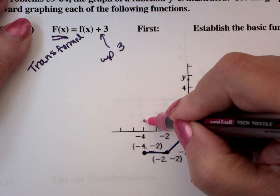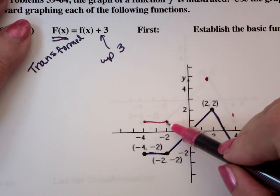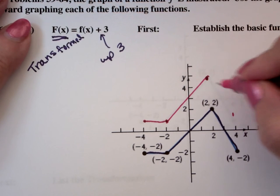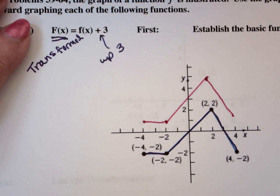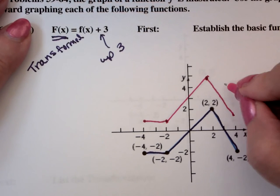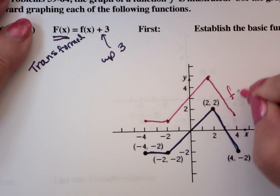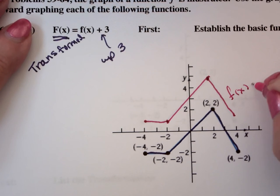And now you're going to go from left to right. Connect the dots. This is the graph of the basic plus three.